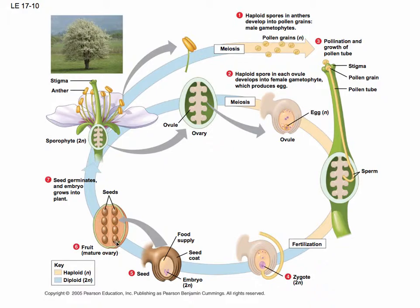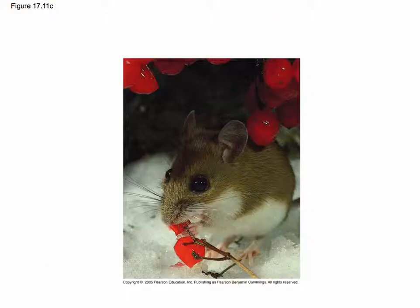Both the seeds and the ovary oftentimes have specialized adaptations for dispersal — seeds and fruit are the main way that plants get around. For example, there's a little mouse eating a berry, basically a highly modified ovary, and when the mouse deposits the seeds elsewhere, they come out the other end. Birds oftentimes do this as well.